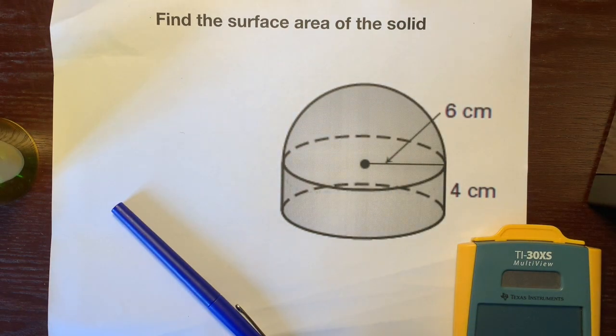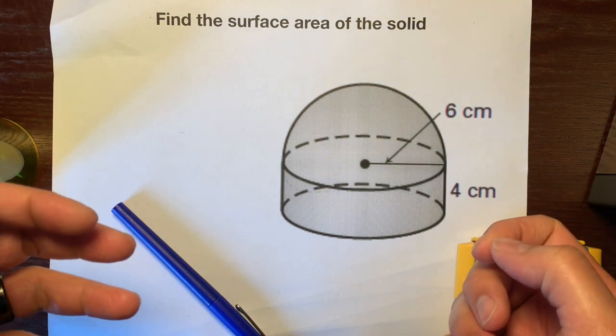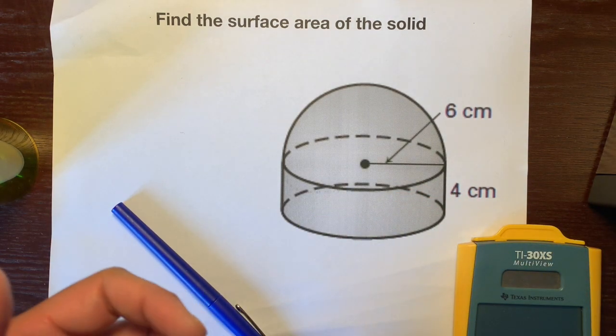Hello, this is Mr. Kinyanola and I'm going to help you find the surface area of a composite solid made up of a hemisphere and a cylinder.